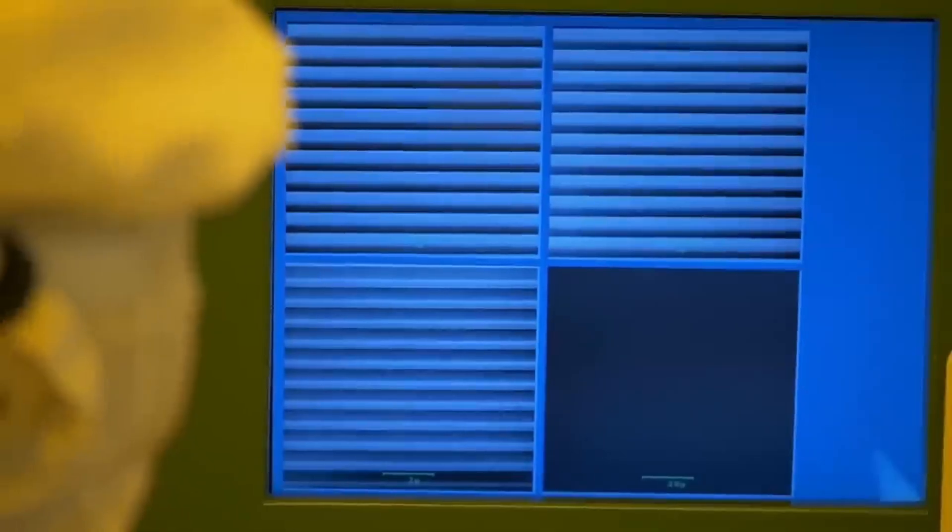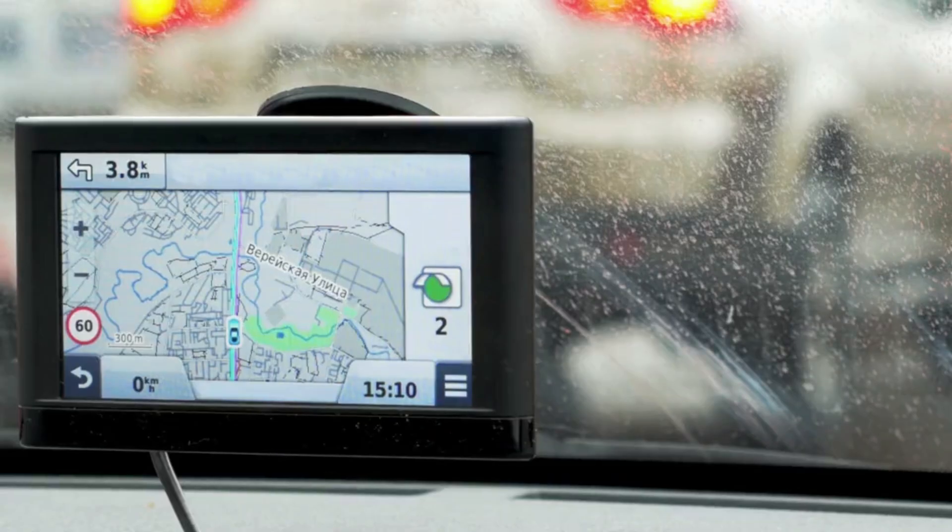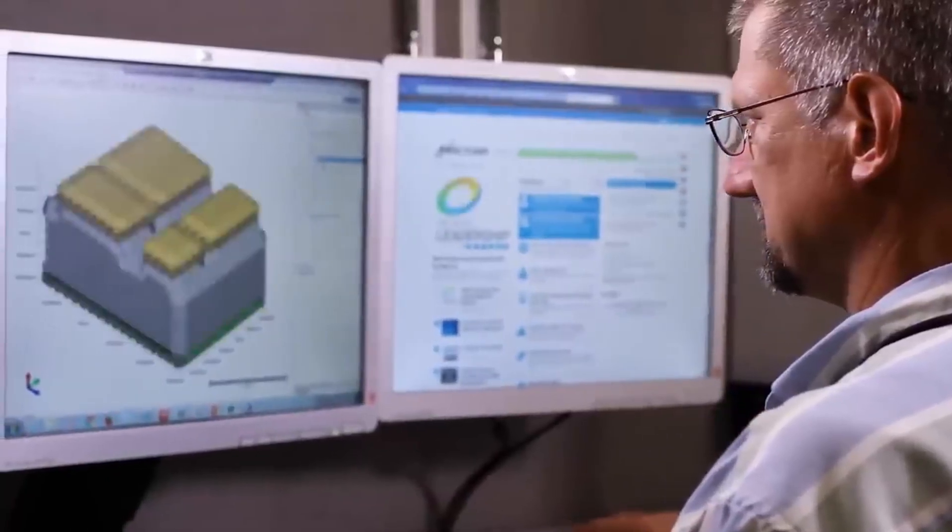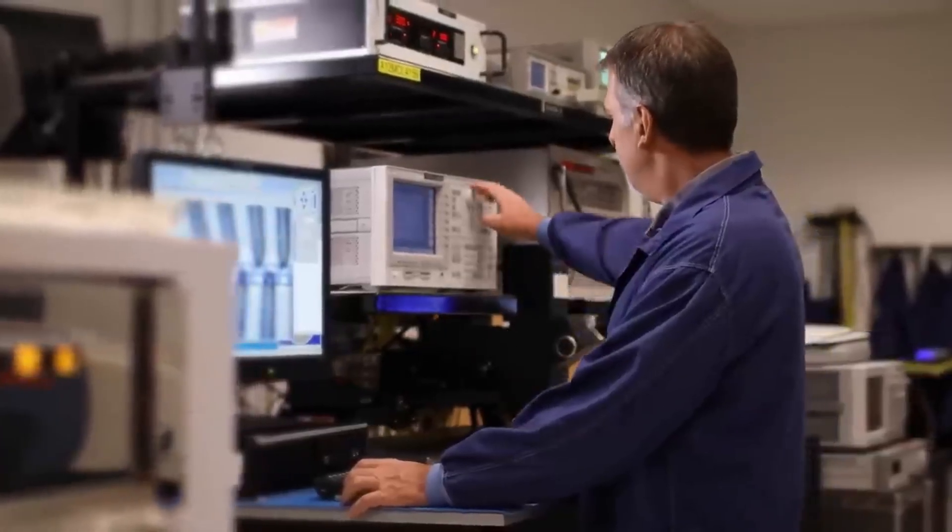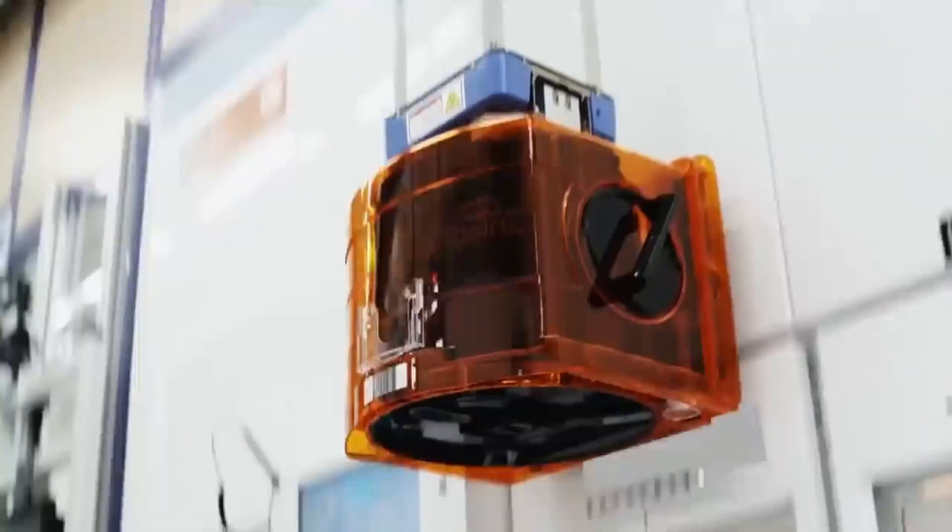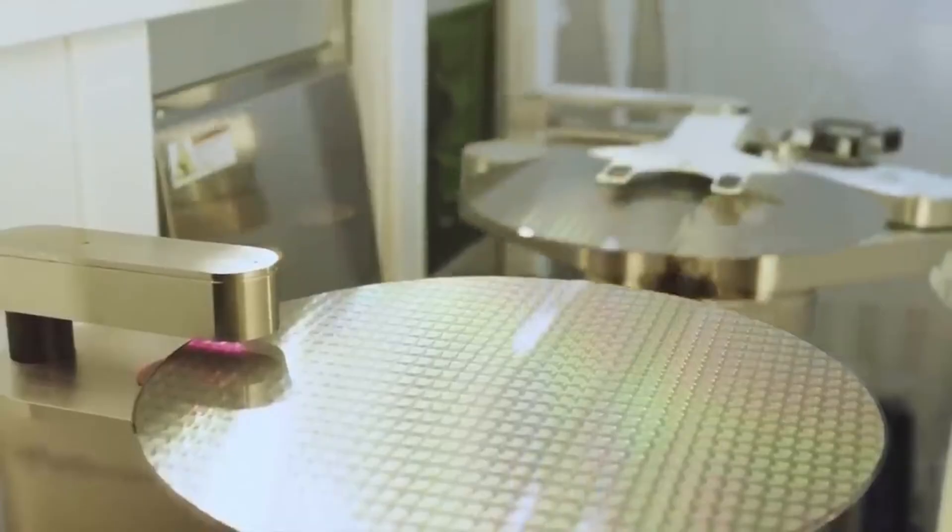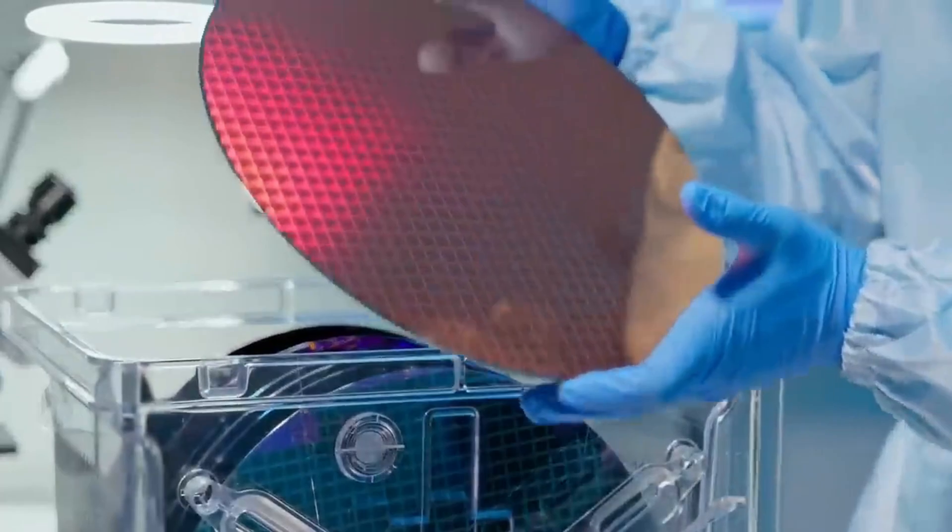Once the wafers are ready, the next step is to decide how the microchip will work. This is like designing the blueprint of an entire city, but in a space smaller than a fingernail. Engineers use computer programs to create a detailed layout showing where each transistor will go, and how they will connect so the chip can do its job, whether it's processing video, calculating routes in a GPS, or controlling a car engine. This design is not made casually. It is reviewed again and again to make sure there are no errors, because even one mistake could cause the chip to fail. Once the design is perfect, it becomes a template called a mask, which will be used to print the circuit onto the silicon wafer.